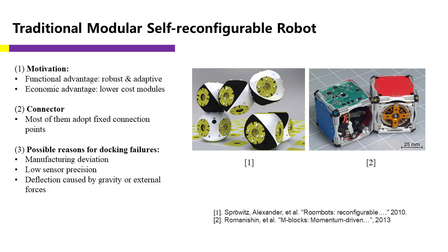Although modular robots have the advantages of versatility and low cost, most of their docking mechanisms use a fixed connection method to attach to their peers, ignoring issues such as imperfect manufacturing or low sensor precision. In large-scale self-assembly or self-reconfiguration, this reliance on a specific connector location can result in mission failure.